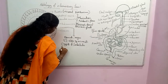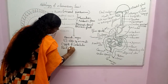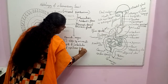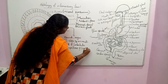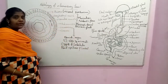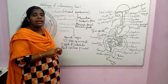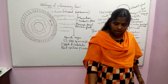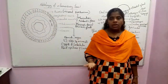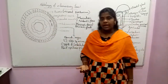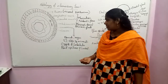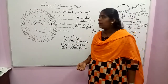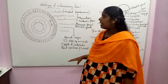The lacteals are large lymph vessels into which lipids are absorbed. This is all about the histology of the gut — the cross-section and internal structure of the human gut.